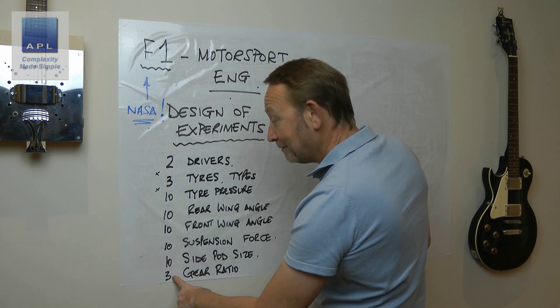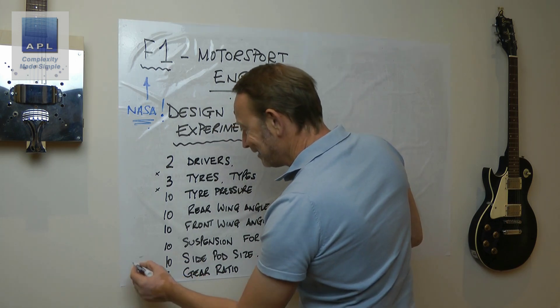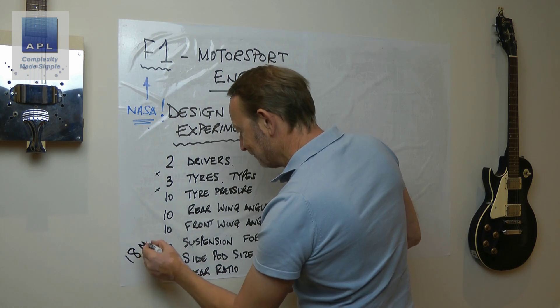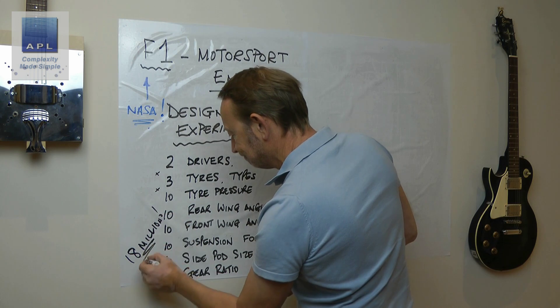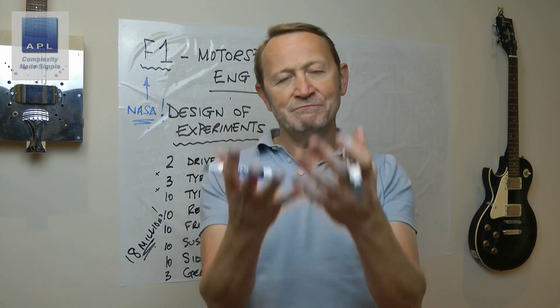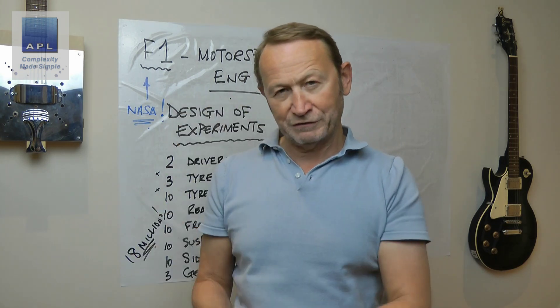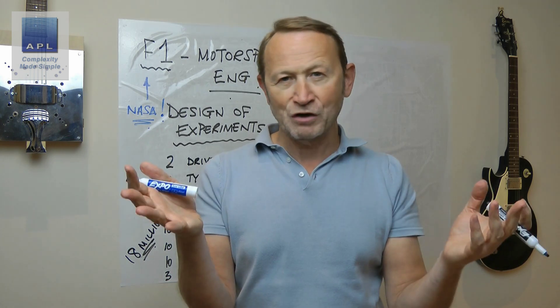Two by three, six times ten, sixty times ten, six hundred, six thousand, six hundred thousand, six million times nine. What's that, six million, eighteen million? When you go to the track on the weekend, you've got eighteen million choices in front of you. You have a limited amount of testing time and you've got to find the best settings.